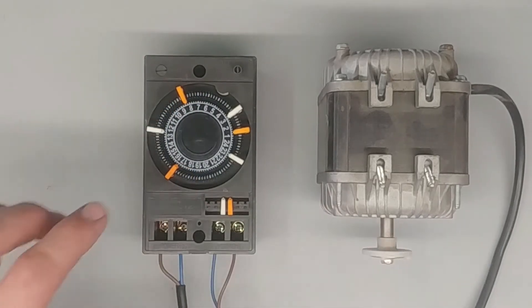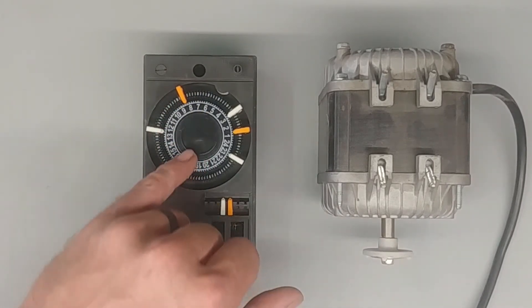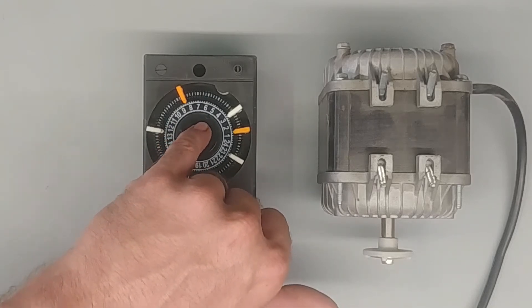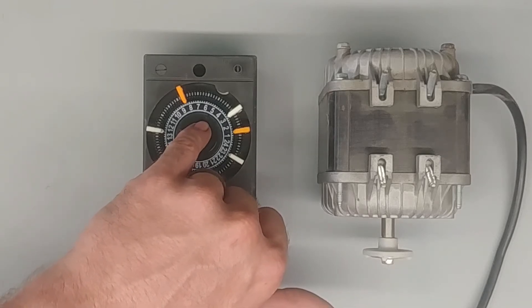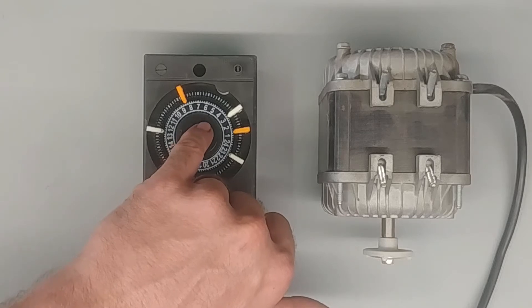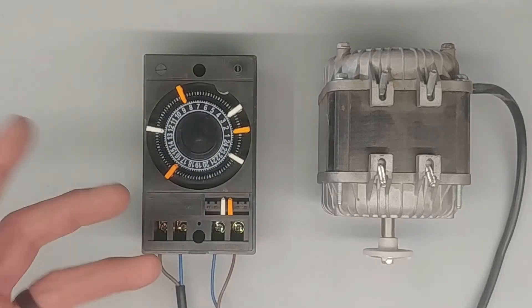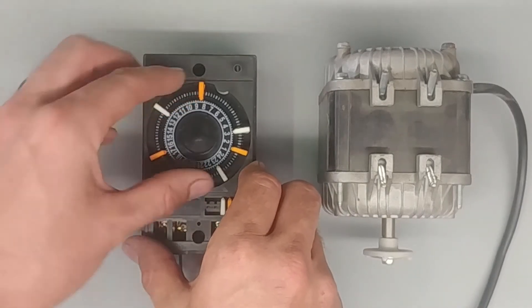When setting the time on these timers, just check for the little arrow there. Some are labeled with a little bit of white paint, but this one is totally black. There's a little triangle right there, a little arrow that points to the time currently. When setting this thing, you just have to turn it towards the time that it is now.